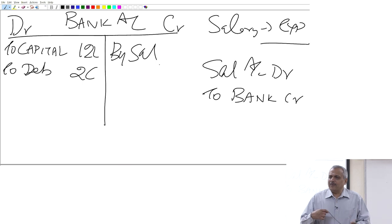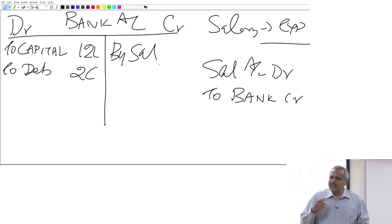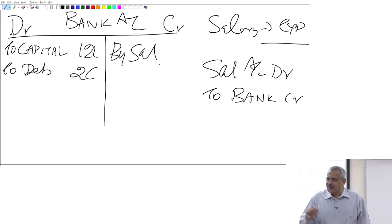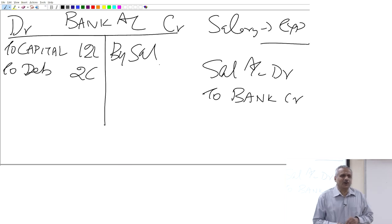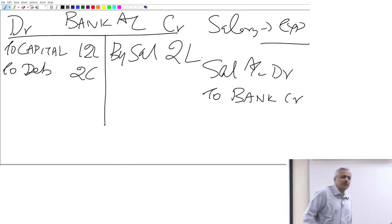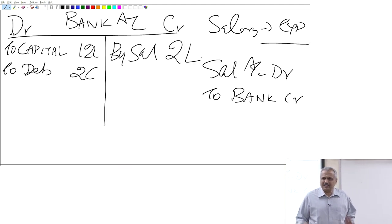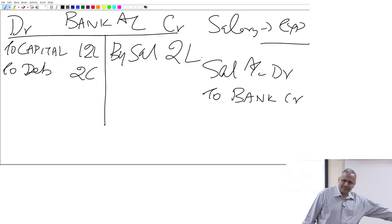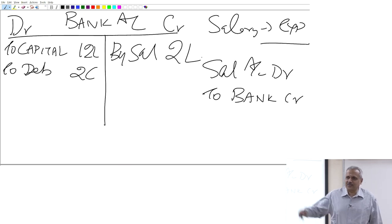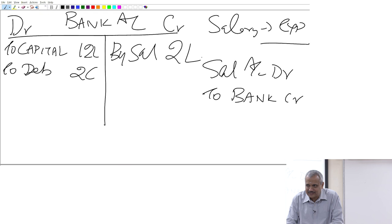When I prepare a balance sheet, in the example we took, we adjusted the bank account for every transaction. But a typical accountant will look at — as of today — what is the bank balance. Suppose the total salary paid is 2 lakhs. The bank balance after the 3 transactions is 12 lakhs plus 2 crores minus 2 lakhs. That will be directly entered in the balance sheet as the bank balance.